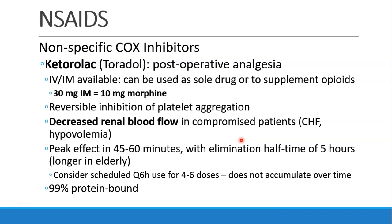Ketorolac, or Toradol, is commonly used for postoperative analgesia. It can be given IV or IM, alone or together with opioids. 30 milligrams of IM Toradol is equivalent to 10 milligrams of morphine. It does have inhibition of platelet aggregation and decreased renal blood flow, especially in patients with CHF or hypovolemia. Its peak effect occurs in 45 to 60 minutes with an elimination half-time of about five hours. It can be ordered as scheduled Q6-hour dosing for four to six doses. Ketorolac is 99% protein bound.